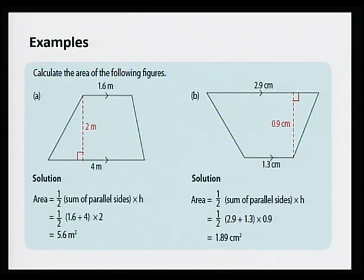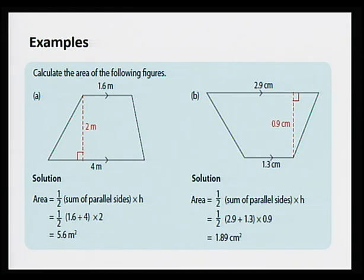Now let's see how to calculate area of trapezium in these two examples. In the first one, we have a trapezium with two parallel sides: the upper part is 1.6 meters and the lower part is 4 meters, and the perpendicular height is 2 meters. So the area equals half times sum of parallel sides times height, which is half times (1.6 plus 4) times 2, equal to 5.6 meters squared.